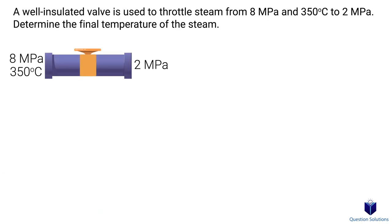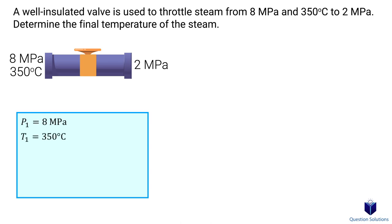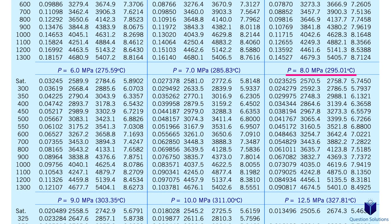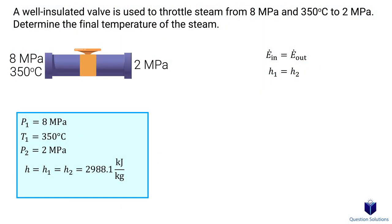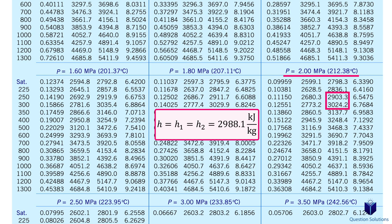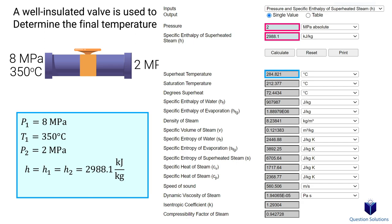In this problem, we have steam being throttled and we have to figure out the final temperature of the steam. The initial pressure is 8 megapascals and the temperature is 350 degrees Celsius. After being throttled, the pressure is now 2 megapascals. Since this is a throttling valve, initial enthalpy equals final enthalpy. We find the initial enthalpy from the steam table at 8 megapascals and 350 degrees Celsius. At the exit, pressure is 2 megapascals, and the enthalpy value falls between two table values, so we need to interpolate or use an online steam property calculator to find the final temperature.